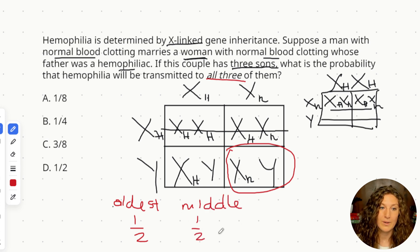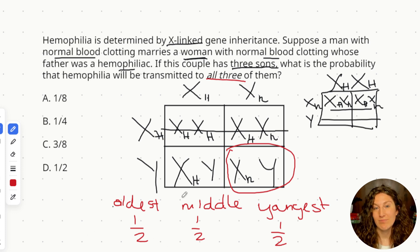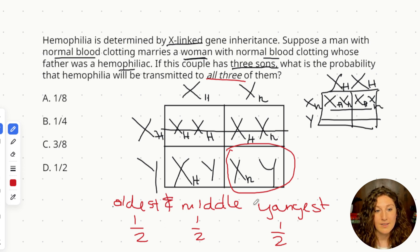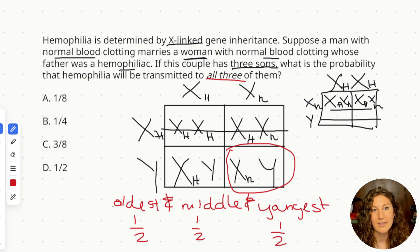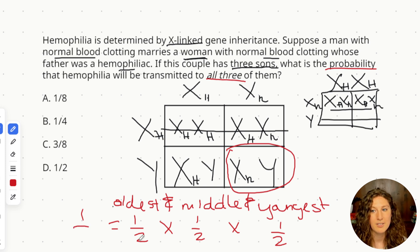Again, it's the same probability: one half. And the youngest son — again one half. We have the same probabilities for all three; it does not change between multiple children. So how do we calculate the overall probability across multiple sons? When the oldest AND the middle AND the youngest all need to have the gene, we multiply. Multiplying fractions: 1/2 × 1/2 × 1/2 = 1/8. So one eighth is our answer.